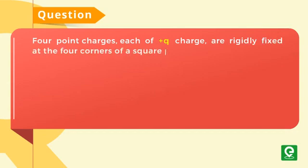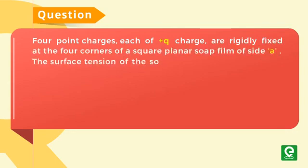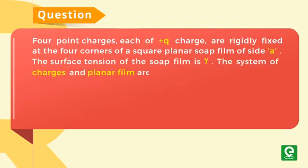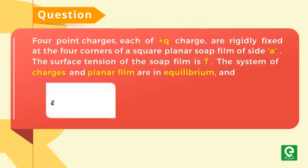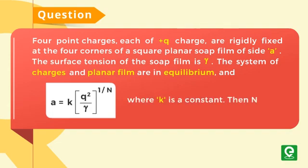The surface tension of the soap film is gamma. The system of charges and planar film are in equilibrium, and a equals K times Q squared upon gamma to the power 1 by n, where K is a constant. Find n. This question was asked in JEE Advanced 2011 exam.